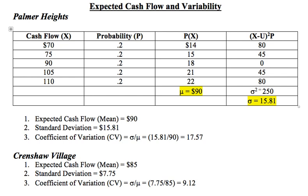This is one of two real estate projects that one might be interested in investing in. You can see in regard to Palmer Heights that we have cash flows — what one would expect. In the first column, we have cash flows dealing with one possible outcome: receiving 70, 75, 90, 105, or 110.